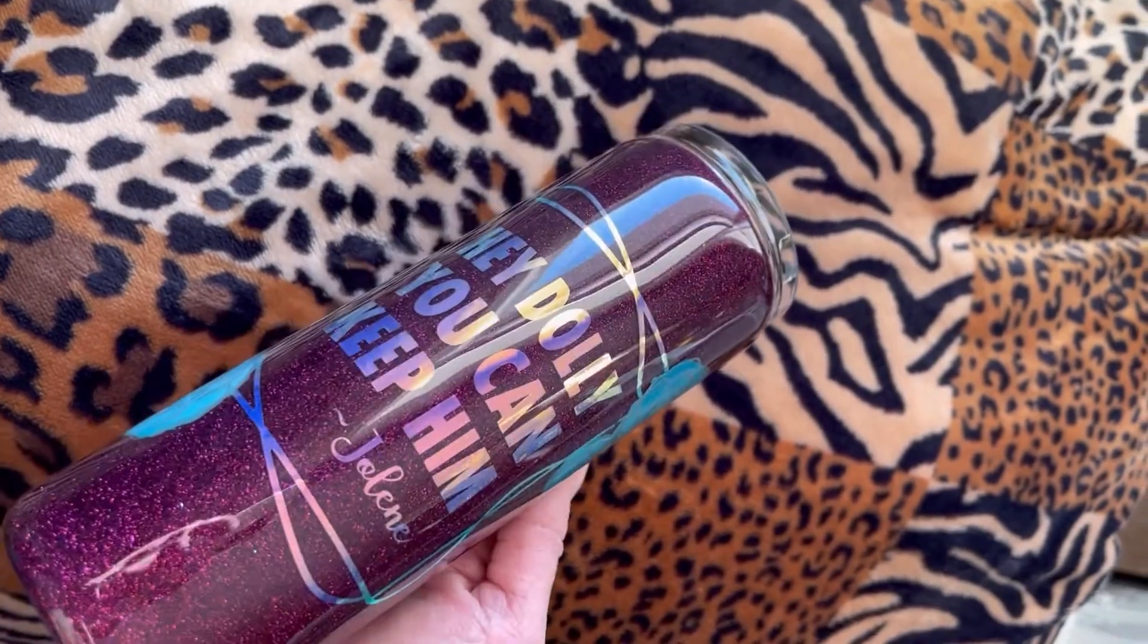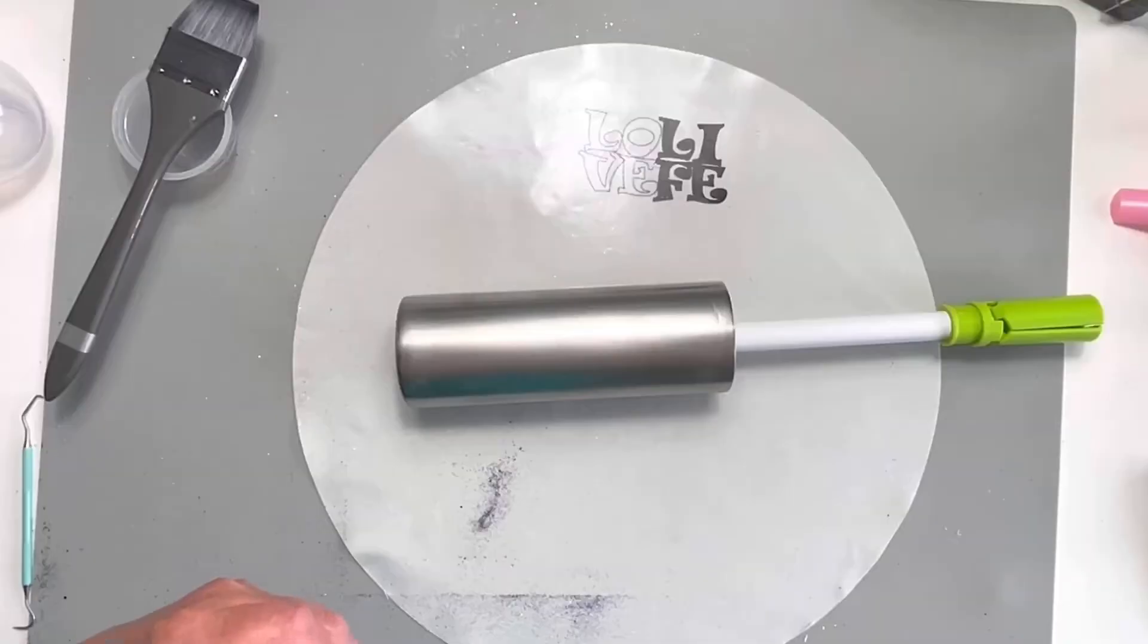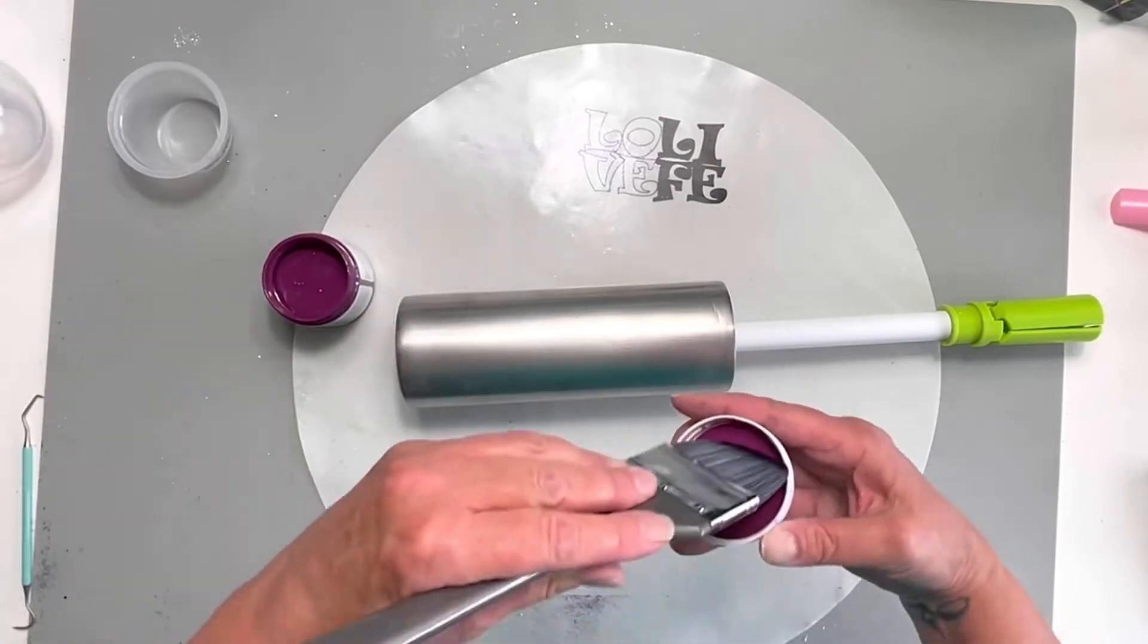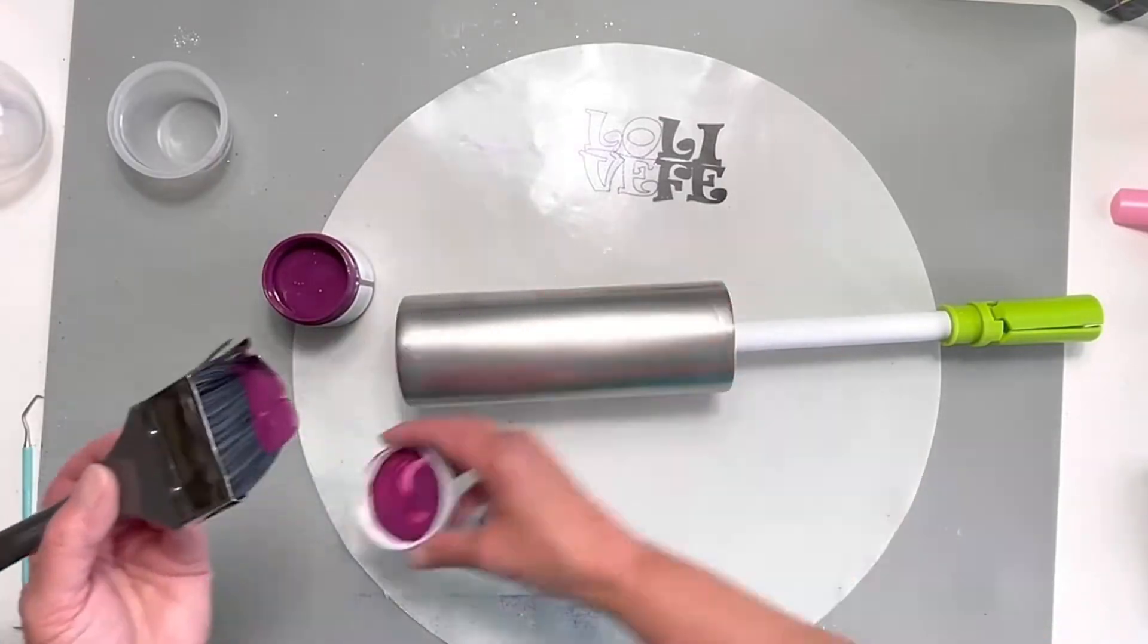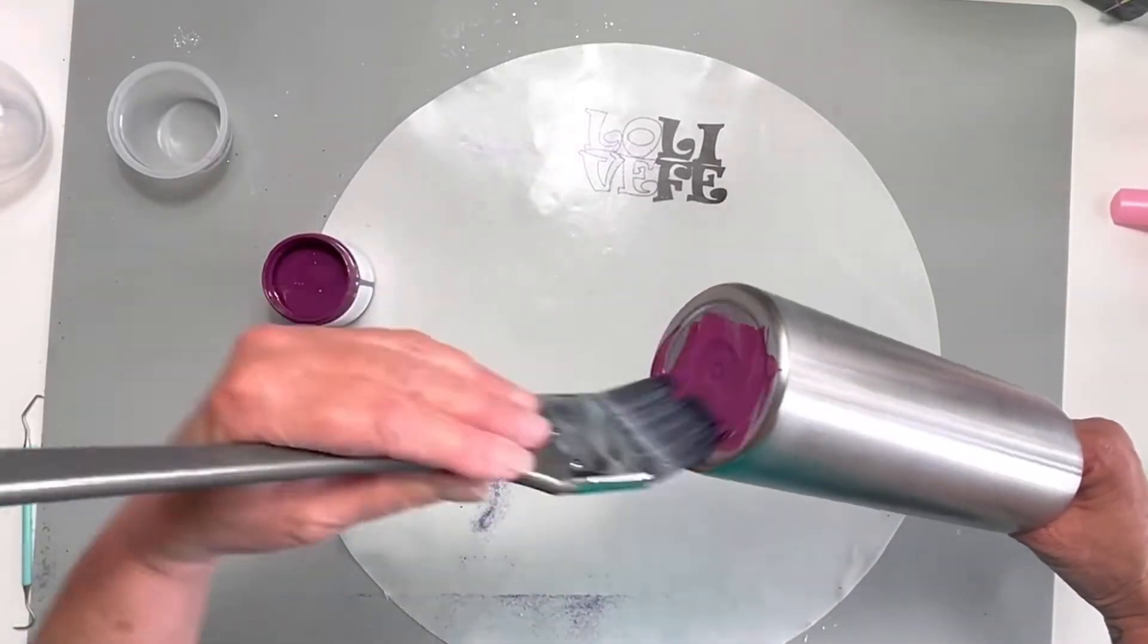This was a really fun project, so let's get started right away. Of course, I started by sanding my tumbler really well with some 80 grit sandpaper and then I washed it off.